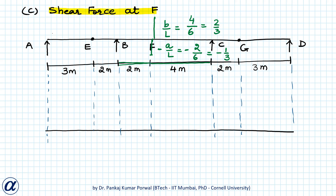So F⁻ has displacement −1/3 and F⁺ has displacement +2/3, and the rest of the beam displaces like a mechanism satisfying all constraints. Because at A, B, C and D we have either hinge or roller supports, they will have zero vertical displacements. At E and G we have internal hinges, so the two segments connected at E and G can have different slopes. Segments AE, EBF⁻, F⁺CG, and GD should each remain straight.